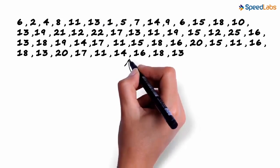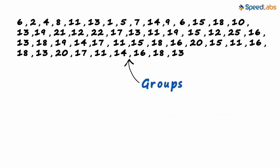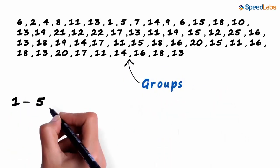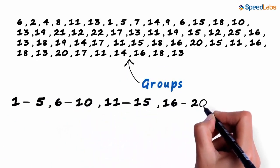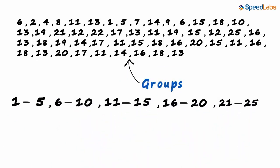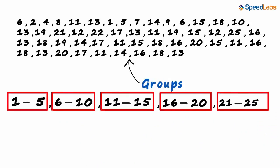So we split the data into groups. Here we can make groups like 1 to 5, 6 to 10, 11 to 15, 16 to 20, and 21 to 25. These are five groups with five numbers in each group.